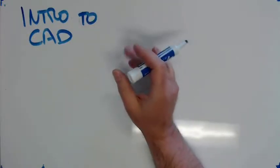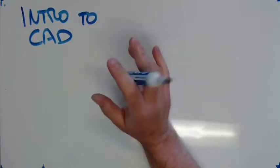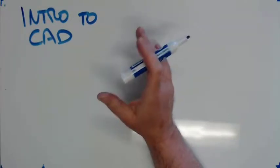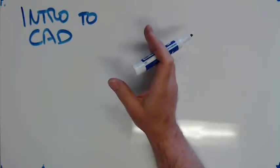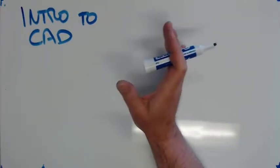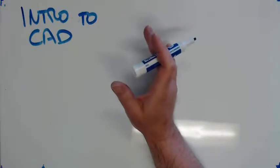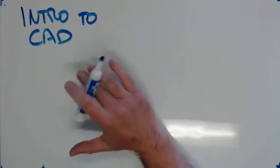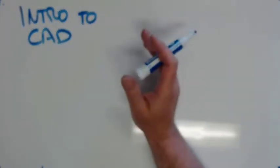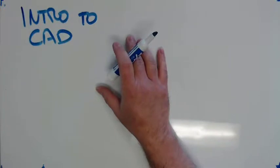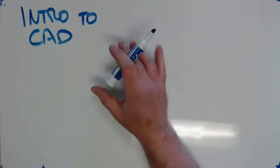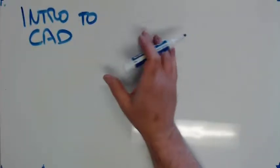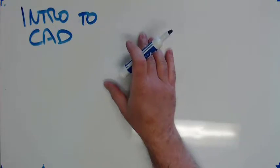It's gotten to the point where it's fairly ubiquitous, and it's really kind of changed the world of welding just right before my eyes. I've been in the welding trade almost 25 years, and it's changed significantly since I started, and most of it's for the better. So what is CAD? CAD is computerized drafting. Anymore, it's used pretty much everywhere in the construction industry.